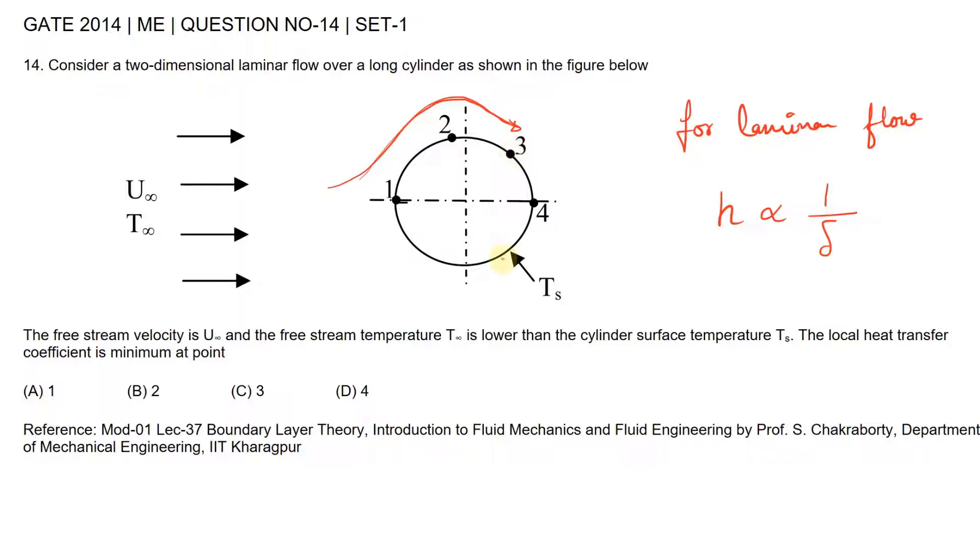So approximately at position two, the value of this boundary layer thickness is maximum, so at this point the heat transfer coefficient H will be minimum. So the correct option should be option B.